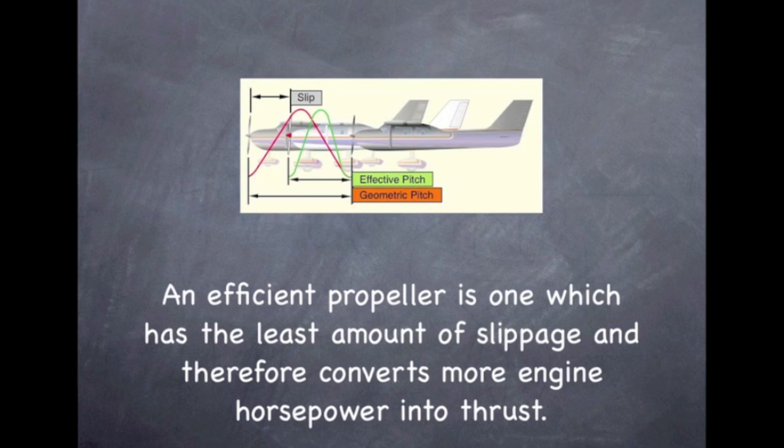So why would we use a constant speed propeller? It's to make the propeller more efficient, use it more efficiently. Most of these single engine aircraft are equipped with a fixed pitch propeller, which is efficient at some specific forward speed. Normally, the propeller design of a fixed pitch propeller is a compromise of efficiency between cruise and climb.